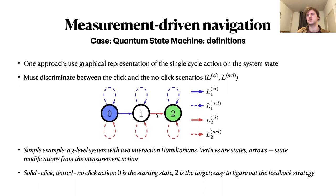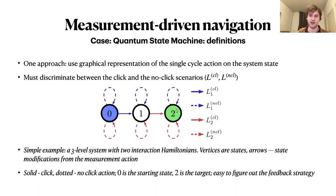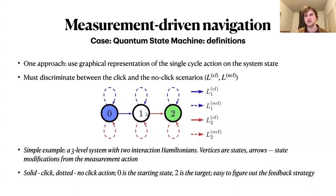Here's a three-level system example with two interaction Hamiltonians. In the passive approach, you loop over the two Hamiltonians and eventually get a click that takes you from state zero to one, then from one to two. You can speed this up by a factor of two simply by applying the first Hamiltonian first and the second Hamiltonian second — a simple example of how the quantum state machine representation turns this into a classical graph exploration problem.